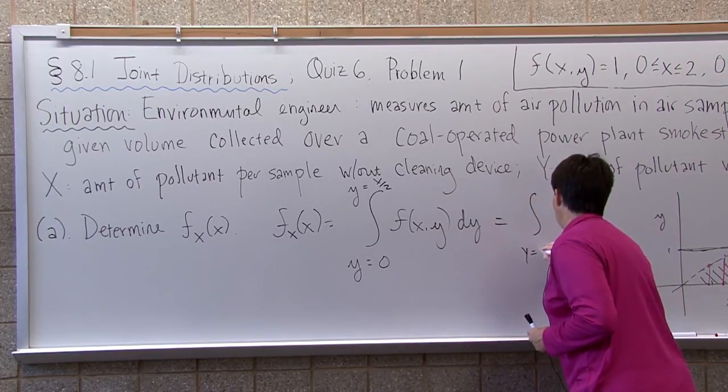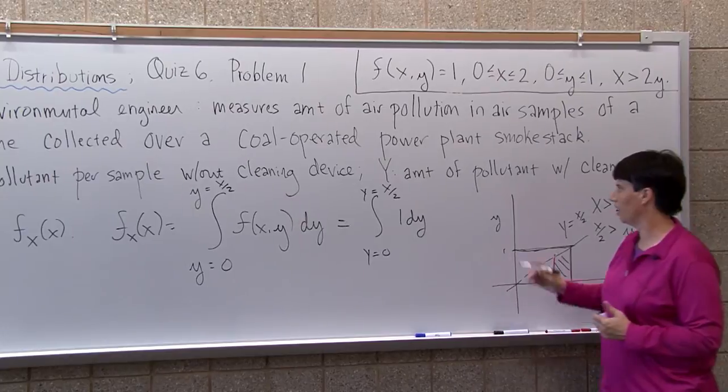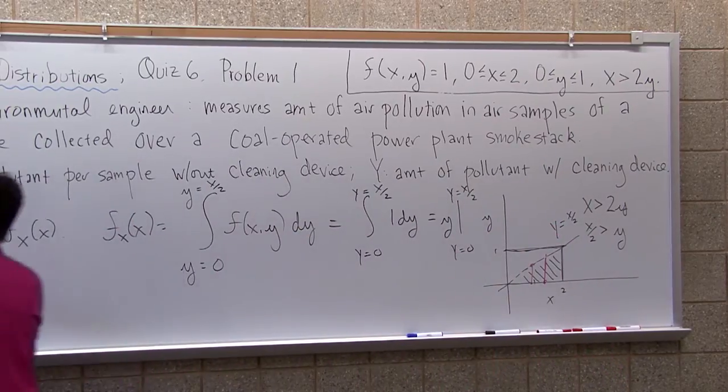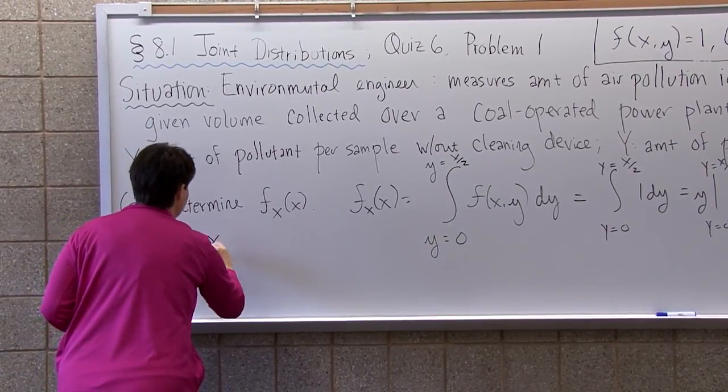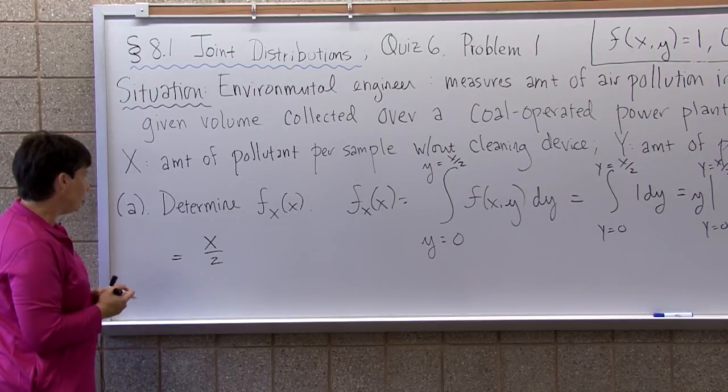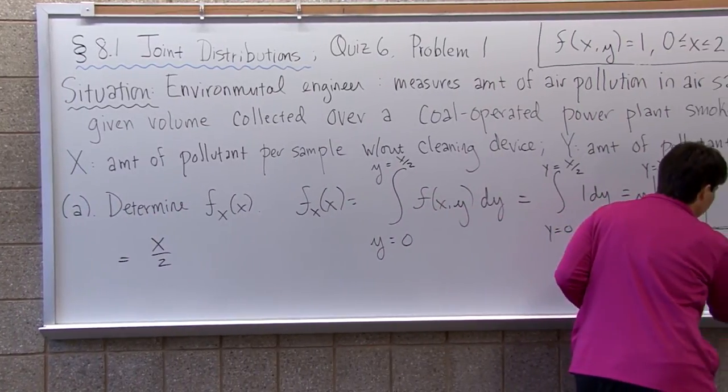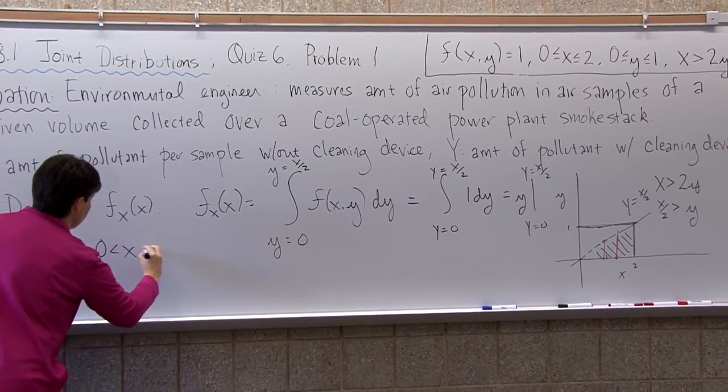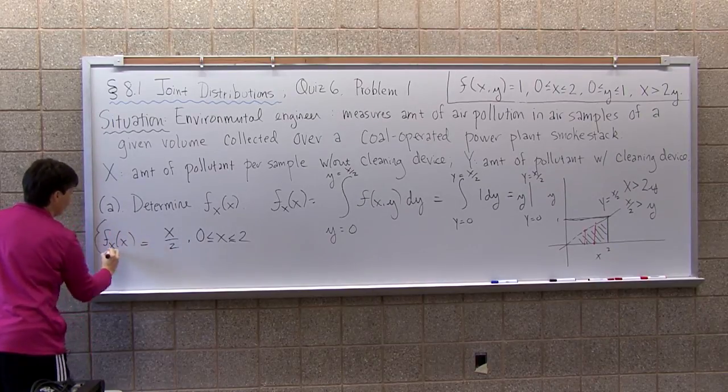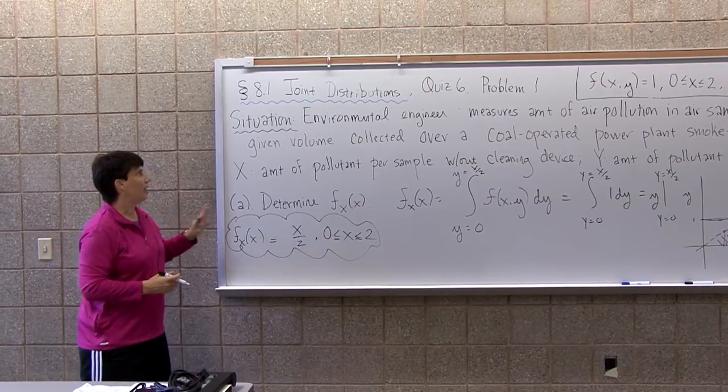So this is going to be Y is from zero to X over two. F of X, Y is one D Y. So luckily, we have a very nice function to integrate. So this is Y from Y equals zero to Y equals X over two. So if I plug that in there, I'm going to get X over two minus zero. So X over two. F of X, the marginal, is just X over two. Last thing I have to do is figure out what this guy's support is. But you can see going back to the beginning, X's were defined from zero to two. So if I pick any Y in here, my X's are going from zero to two. So this is my support. I mean, again, it's continuous, so I don't really have to worry too much there. So this is F of X of X, my marginal for X. And you can check it. He's valid, right? Integrate him over zero to two, you're going to get one. So there's the function that defines how X is working.